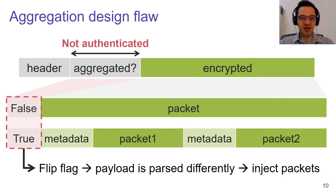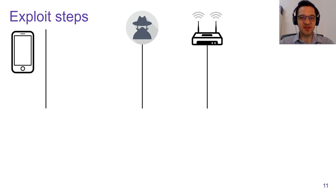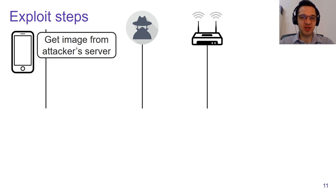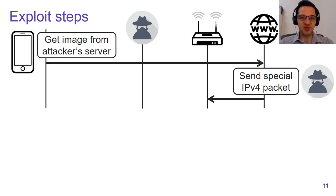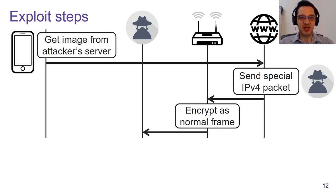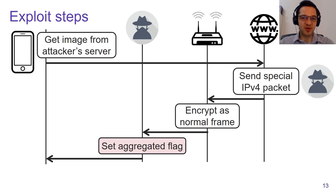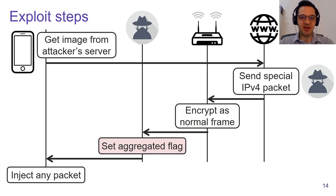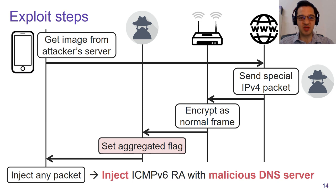I'll explain the steps an attacker has to take to exploit this. First, the adversary must be within physical range of the victim and access point. Second, the adversary needs to trick the victim into downloading an image from the attacker's server, causing the victim to set up a TCP connection. The adversary will send a specially constructed IPv4 packet over this connection. This packet will be encrypted by the legitimate access point, but before it arrives at the victim, the adversary sets the aggregated flag. As a result, we can inject an ICMPv6 router advertisement that tricks the victim into using a malicious DNS server.